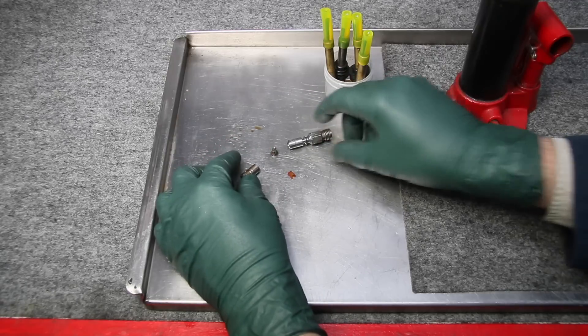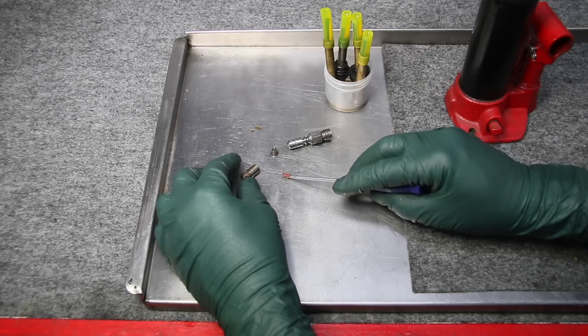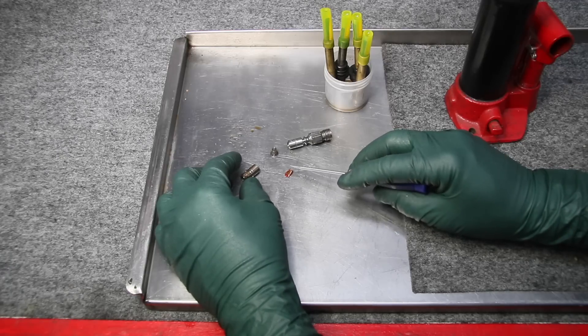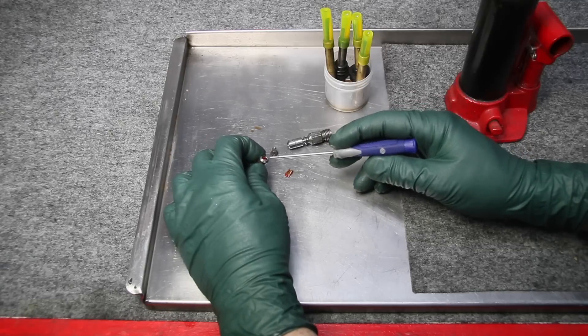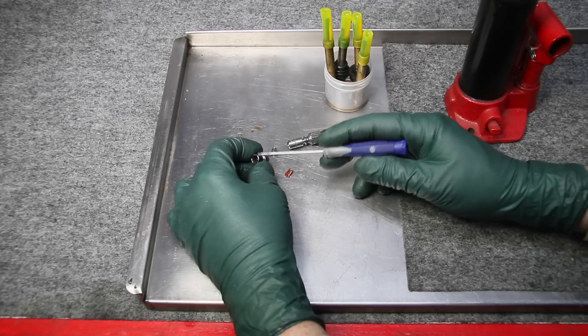But look at this right here. You know what that is? That's a super fine plastic screen. That's a filter sitting right down inside this injector just before the fuel gets to the tip.